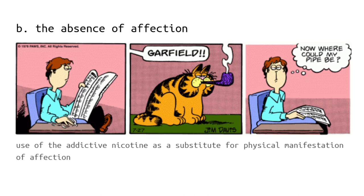In the second panel he calls out, Garfield! Garfield! But Garfield is gone. Garfield has taken John's pipe and has used, as a substitute for this physical affection, the crux of nicotine. And then in the third panel we see John — affectionless, isolated, and alone — is now turning to the use of drugs. He wonders, now where could my pipe be? Without the physical manifestation of affection, he's desperate for some sort of dopamine, and he seeks the aid of nicotine.